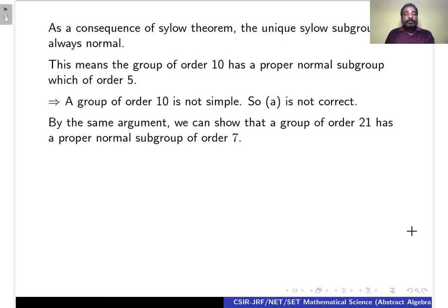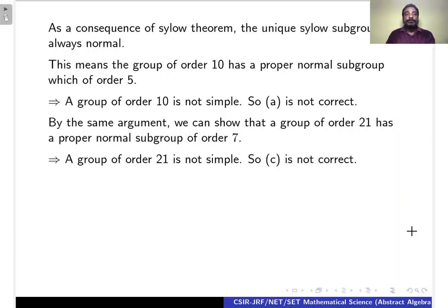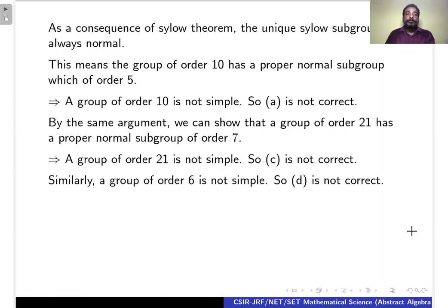By the same argument, we can show that a group of order 21 has a proper normal subgroup of order 7, which means a group of order 21 is not simple. Therefore, option C is not correct. Similarly, a group of order 6 is not simple. Therefore, option D is also not correct.